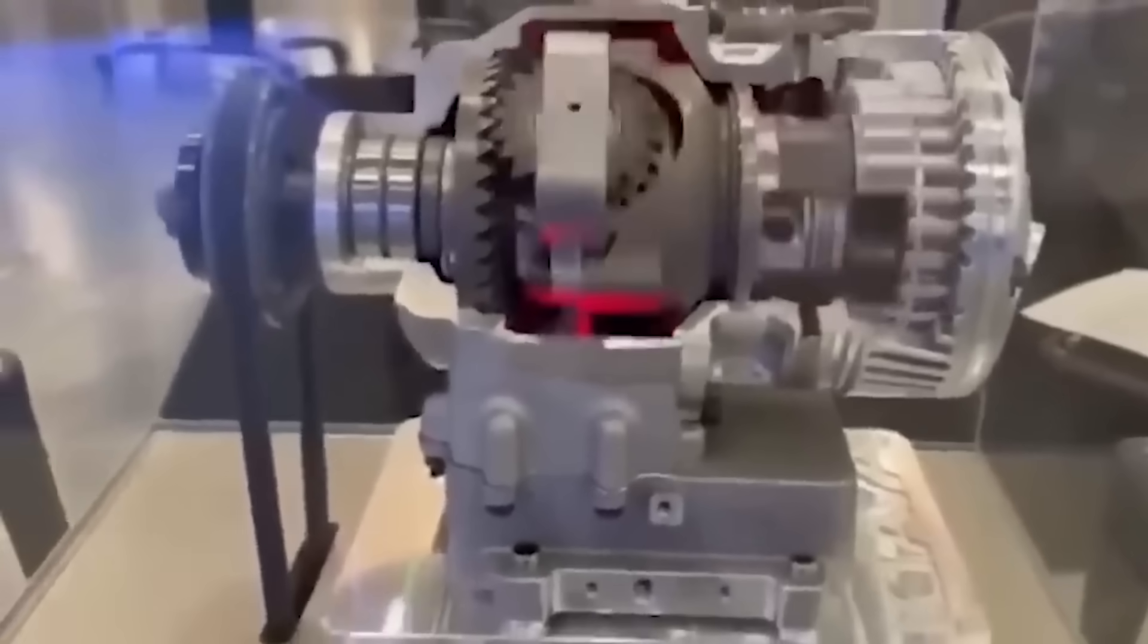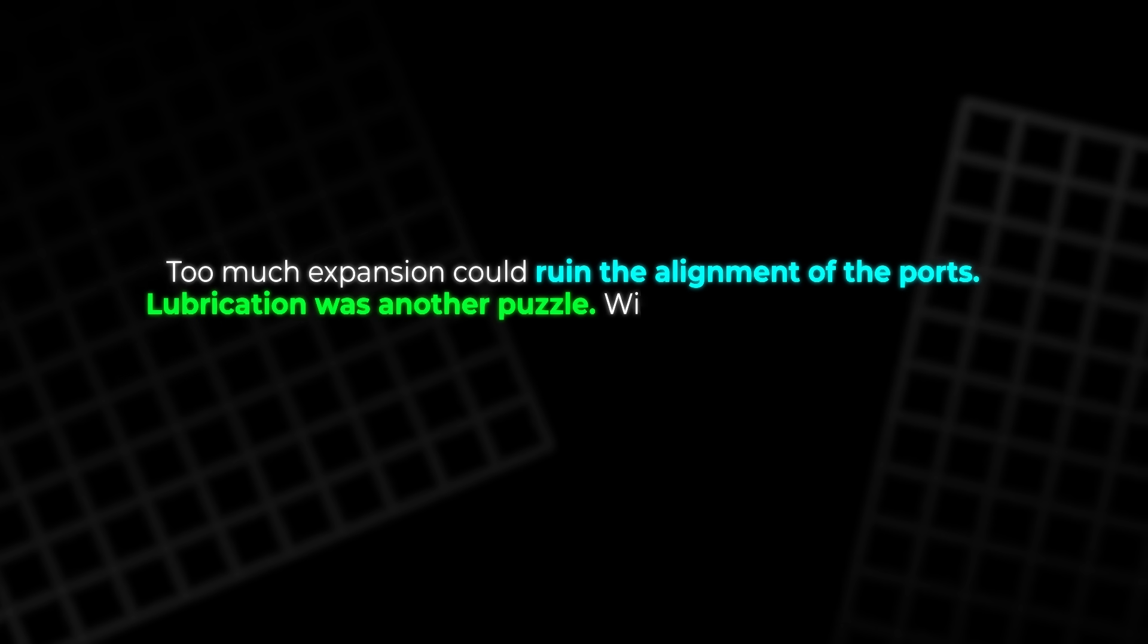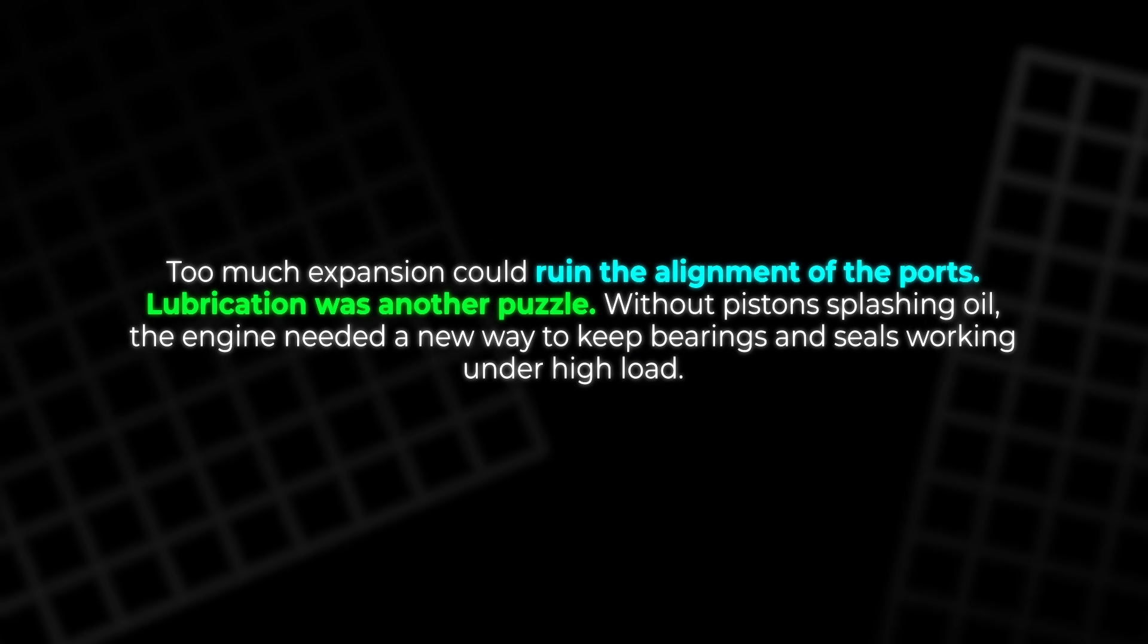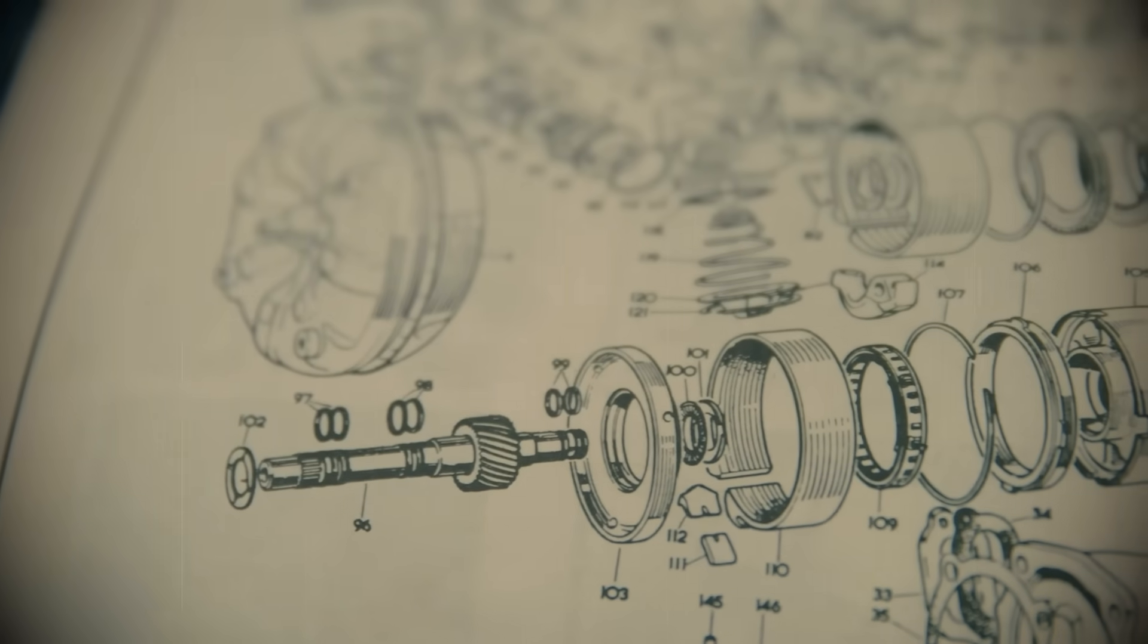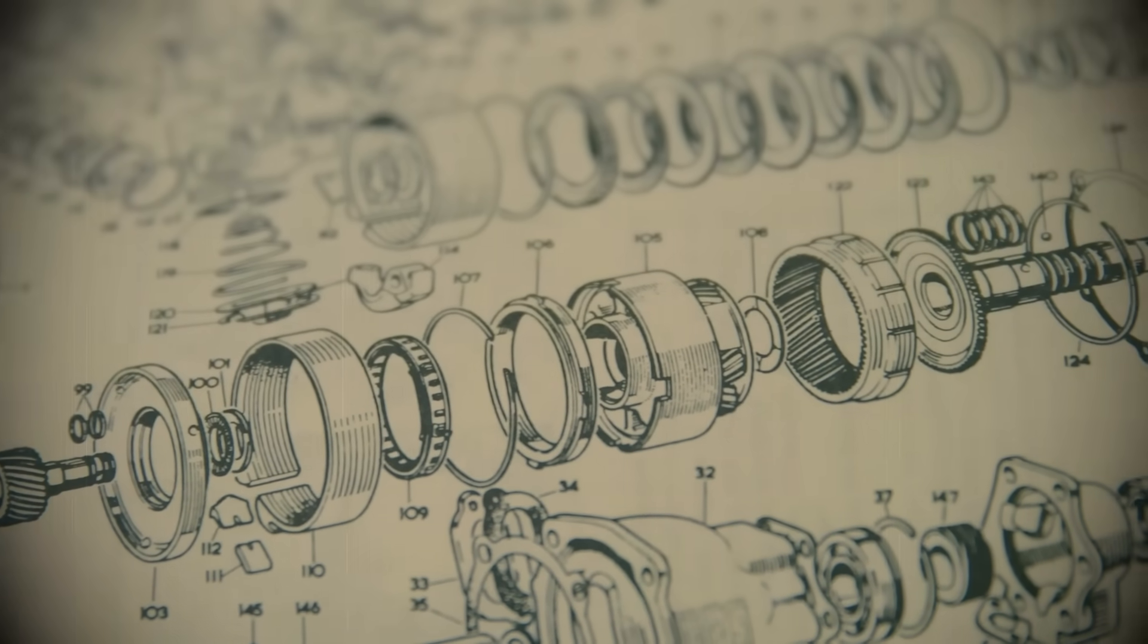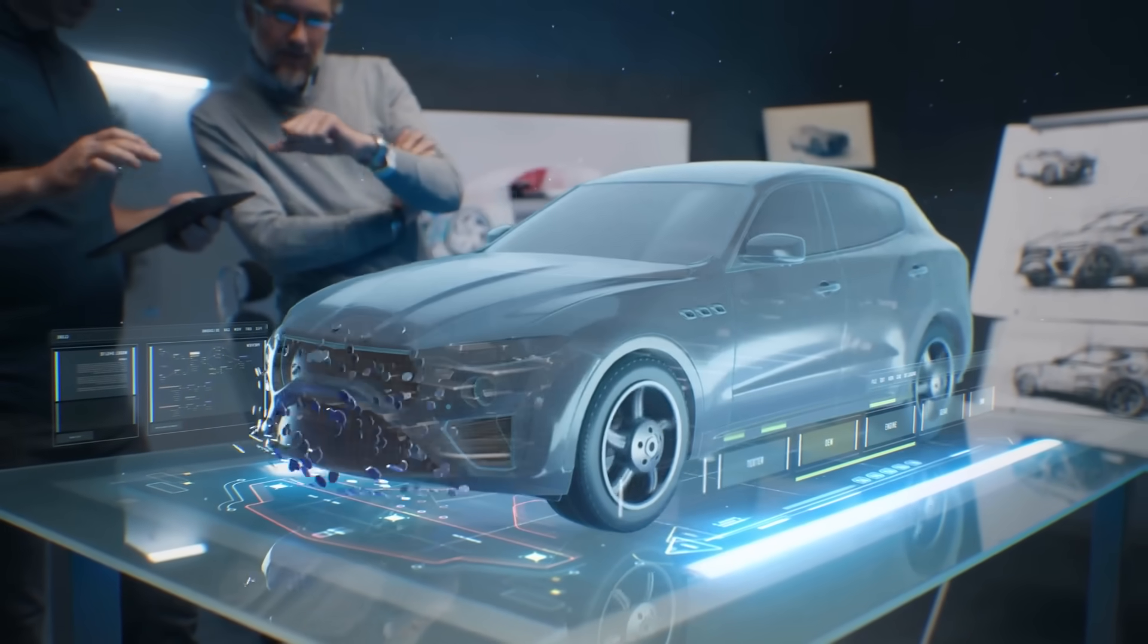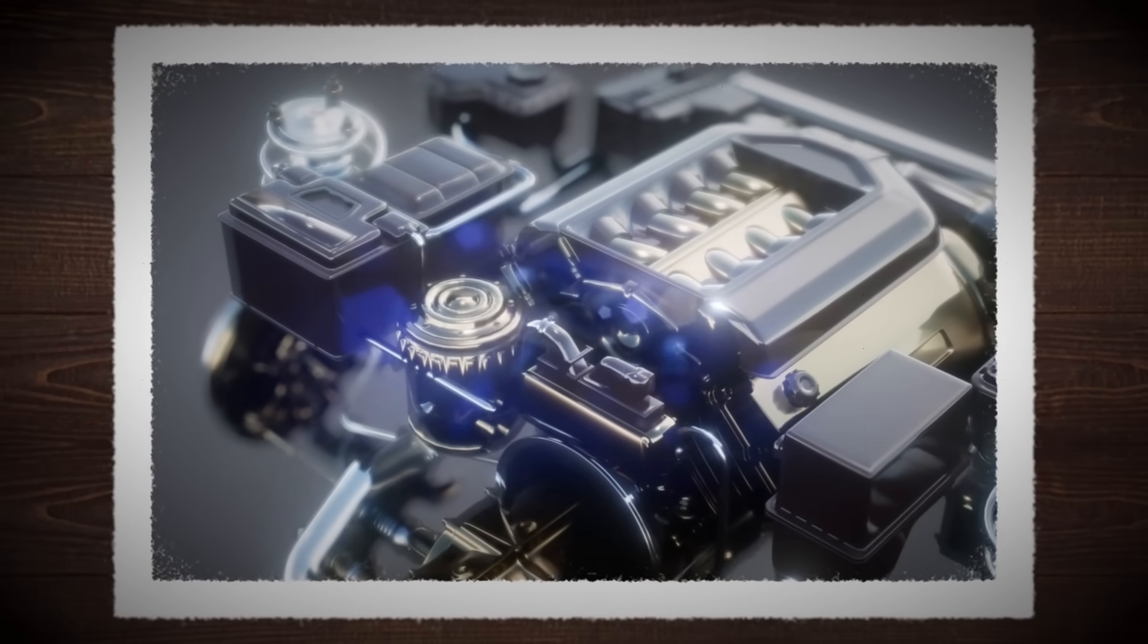It was small, simple, efficient, and surprisingly powerful for its size. It had the potential to change how we think about small power systems in both cars and compact flying machines. The challenges that stopped its success: even with all its advantages, the wave disc engine faced problems that were hard to solve. First, there was manufacturing. The channels inside the disc had to be shaped with extreme accuracy. If a single channel was slightly off, the shock waves would not behave as the models predicted. Machining such fine structures at scale would have been expensive and difficult.